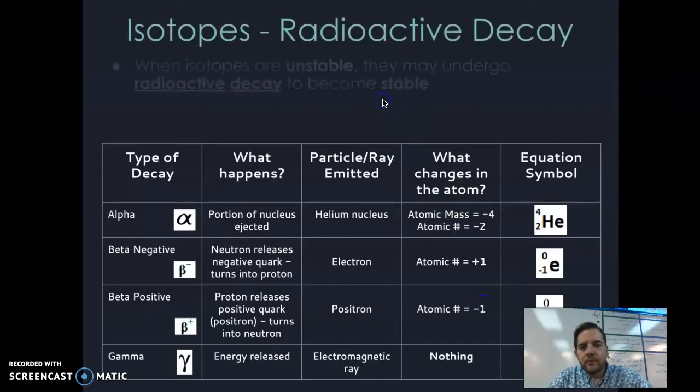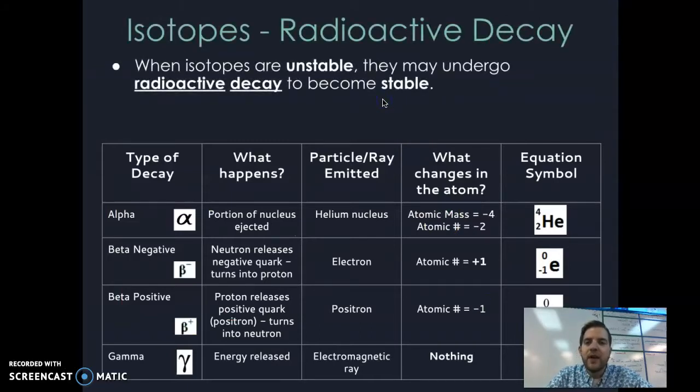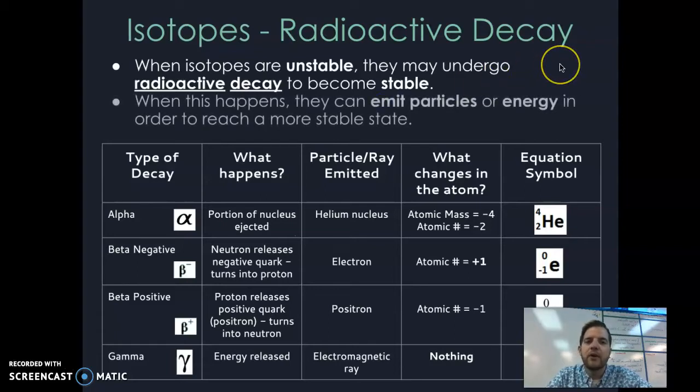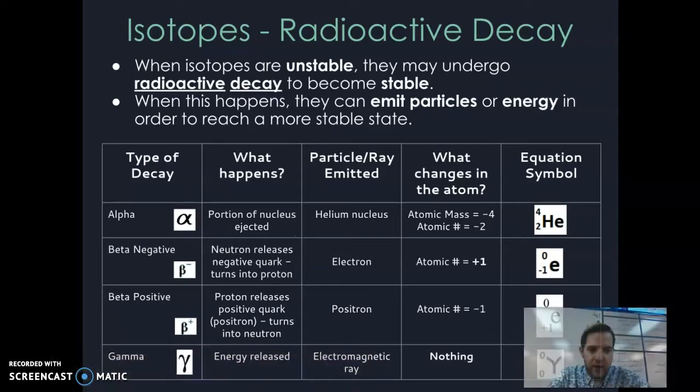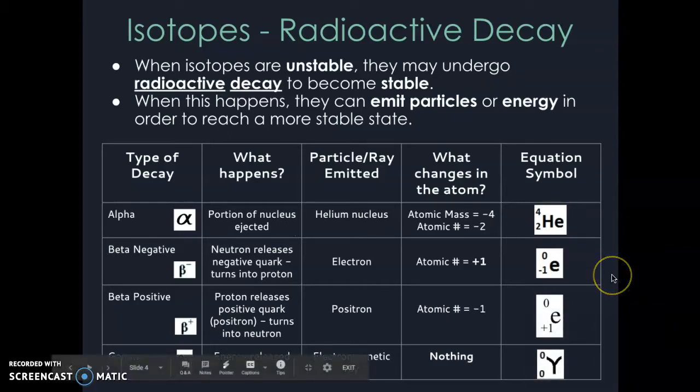When isotopes are unstable, they undergo decay to try to become stable. They'll eject particles or energy to do so. Pause the video, record this screen, copy down this table, and then unpause the video.